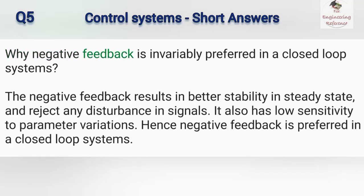Why is negative feedback invariably preferred in closed loop systems? The negative feedback results in better stability in steady state and rejects any disturbance in signals. It also has low sensitivity to parameter variations. Hence negative feedback is preferred in closed loop systems.